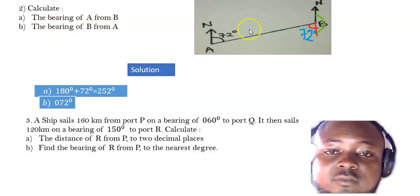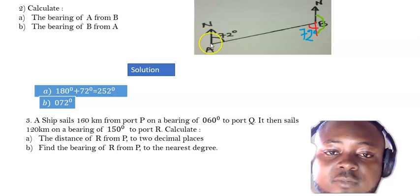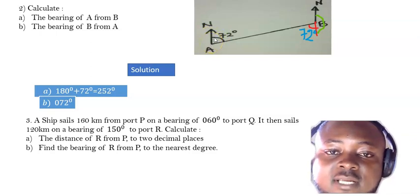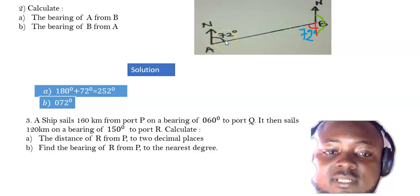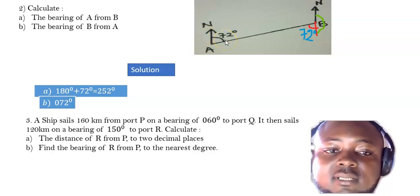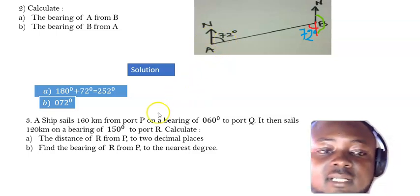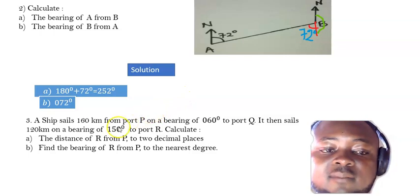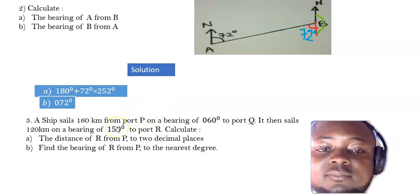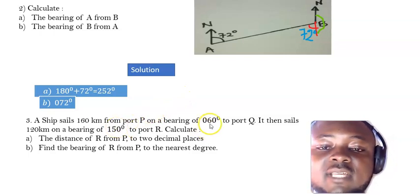The bearing of B from A: when you are at A, you measure the angle which is 72 degrees.